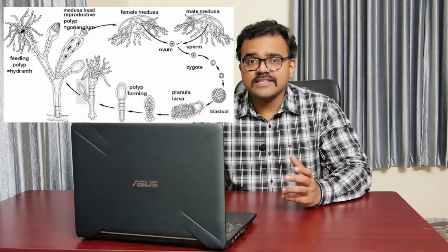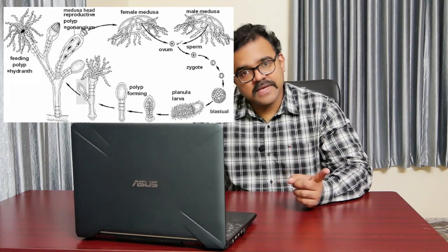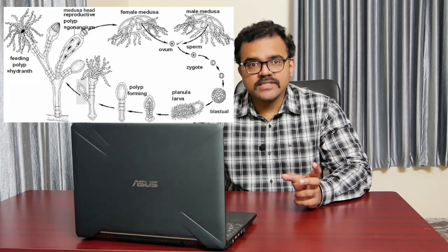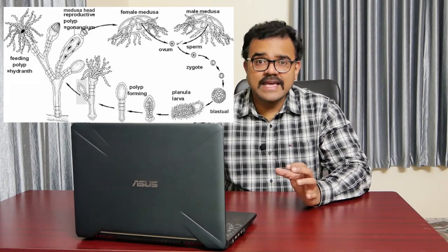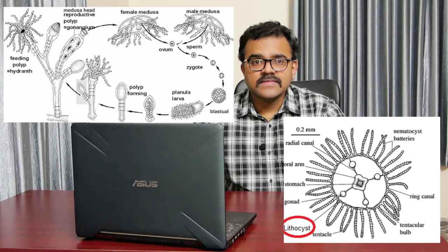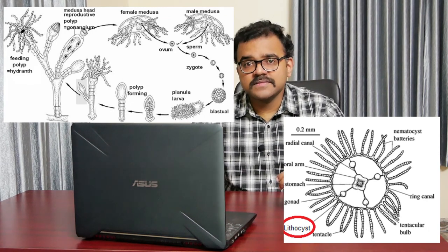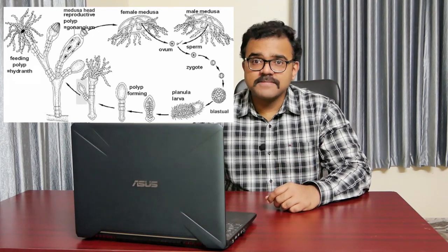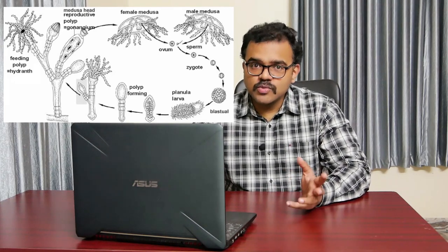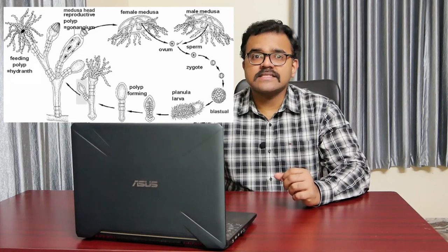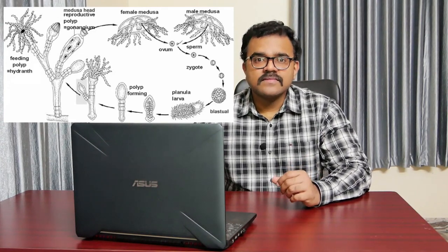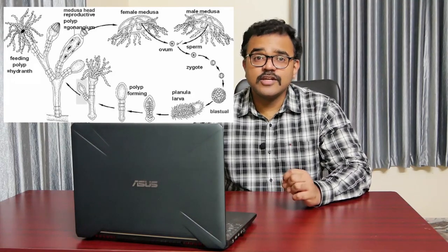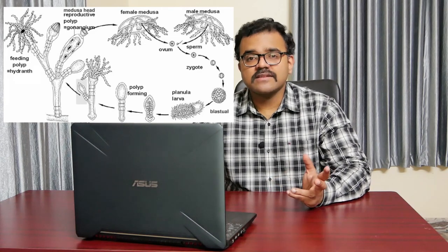Moving on to reproduction and development: the medusae are unisexual or dioecious, meaning sexes are separate — each organism represents only one sex, either male or female. Gonads are ectodermal in origin and remain in close association with the radial canals towards the sub-umbrella surface; they are round in appearance and four in number. Both male and female gonads are similar externally. The mature male gametes or spermatozoa are liberated into water, and one spermatozoon fertilizes a female gamete or ovum, resulting in the formation of a zygote. The single-cell zygote divides repeatedly, and the daughter cells reorganize to form stages like blastula and gastrula.